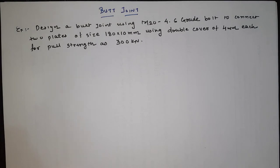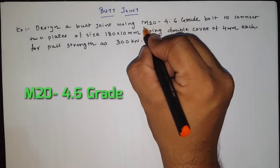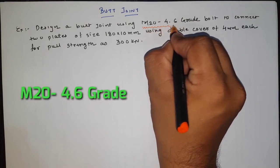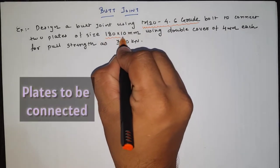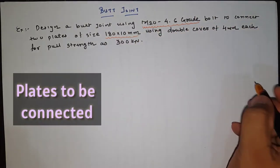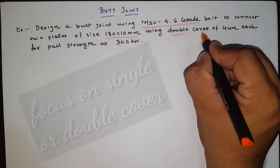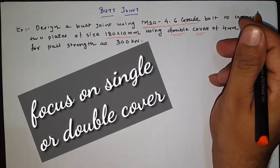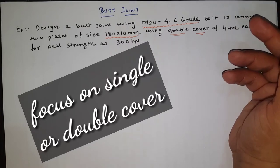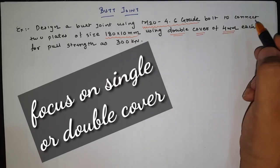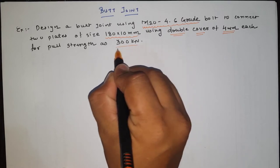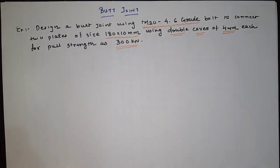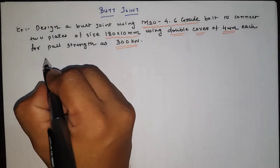We have been given the design data: we have to use M24 4.6 grade bolt in the butt joint, and the size of the plate is 180 by 10 mm. We have given that we have to use a double cover butt joint, meaning we connect using two cover plates at top and bottom, each 4 mm thick, giving us a total of 8 mm thick cover. The design load is given as 300 kilo newton.